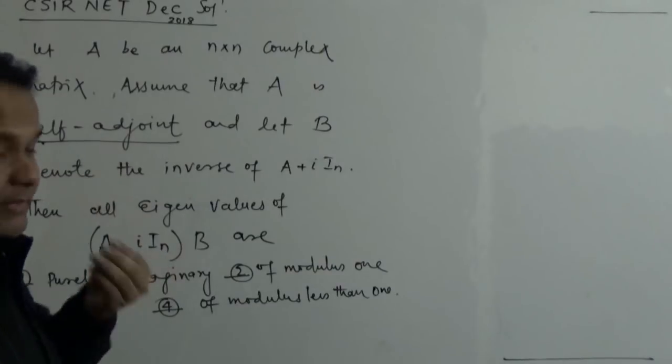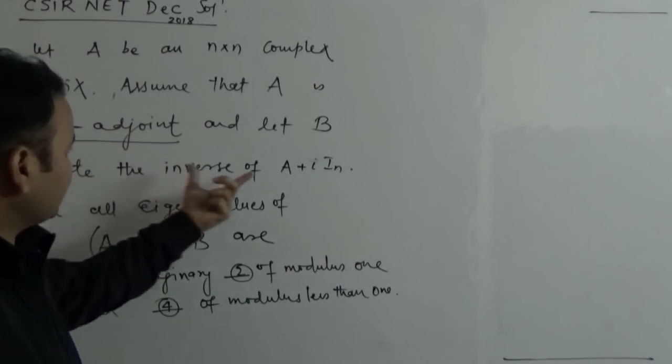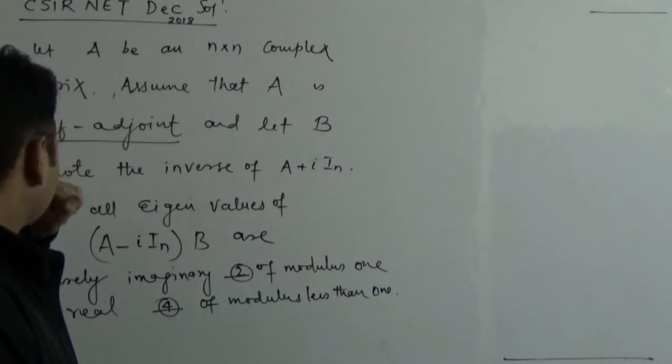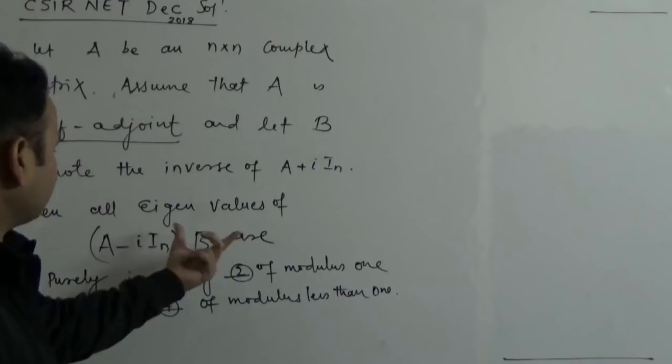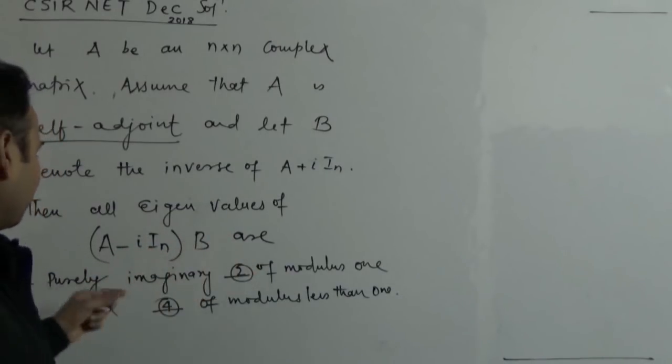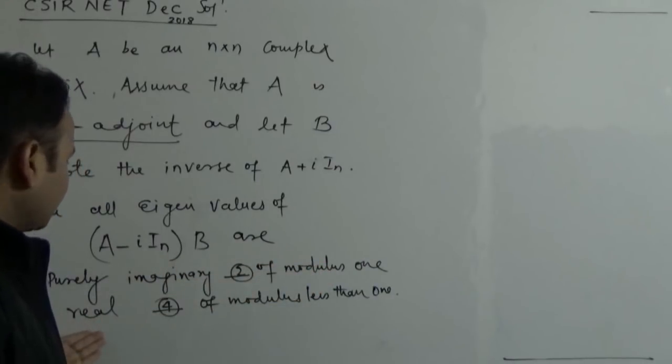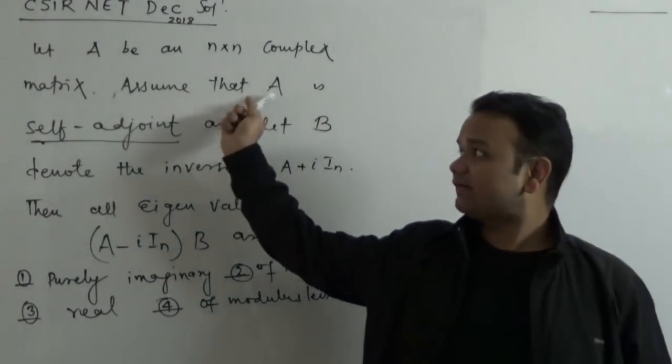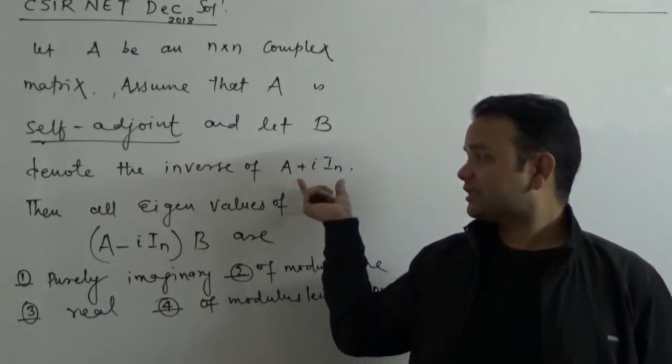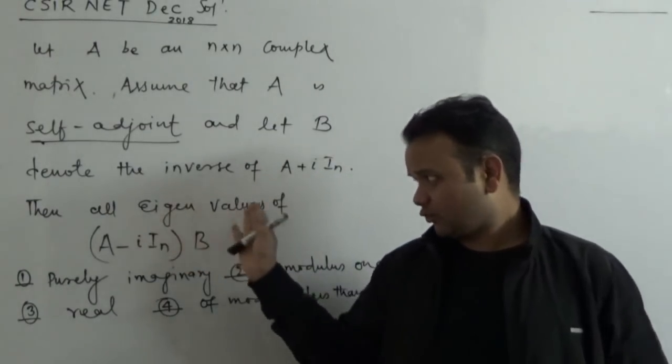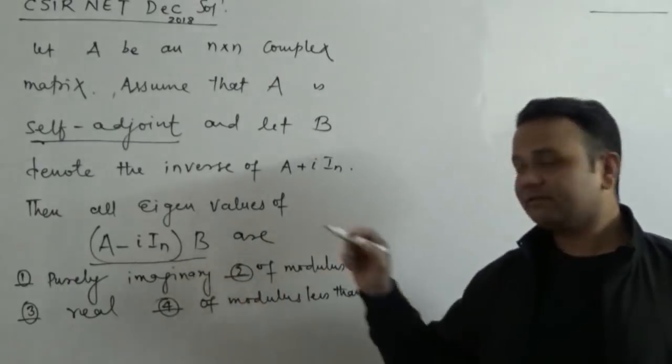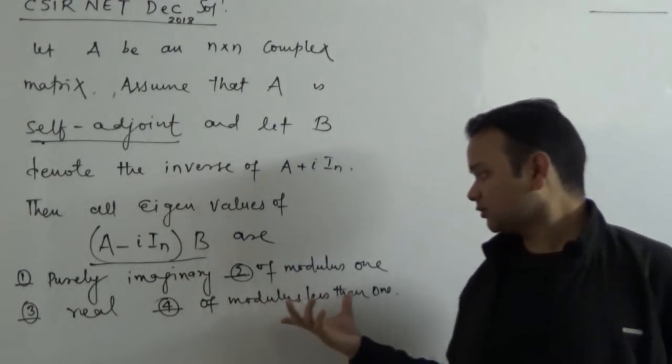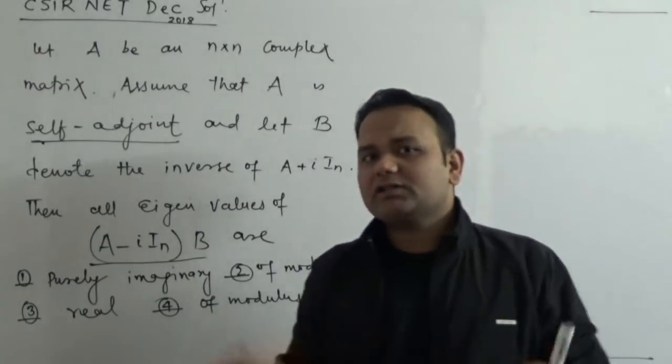We denote the inverse of A plus iI_n as B. Then what are all eigenvalues of this product matrix (A minus iI_n) times B? Are they purely imaginary, of modulus 1, real, or of modulus less than 1? So the question is very straightforward. You have a self adjoint matrix and you have another matrix B which denotes the inverse of this matrix, which means this matrix is invertible. Then what can you say about the eigenvalues of this matrix?